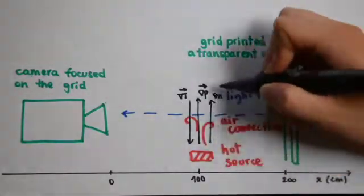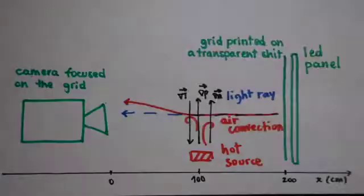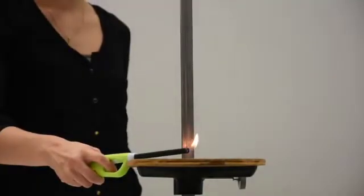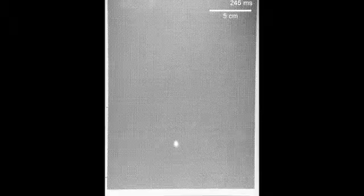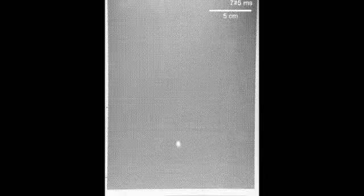The light rays therefore deviate from their initial straight trajectories. Let us first perform an experiment using the open flame of a lighter. The very large temperature fluctuations induce an apparent distortion of the grid, visible to the naked eye.